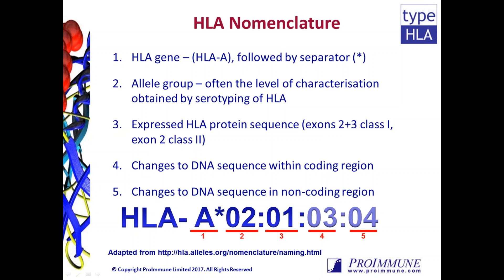The second set of digits — here '01' — indicates the protein sequence expressed in the peptide binding regions of the HLA. As these first two sets of digits are often four digits, for example here '0201', this is often referred to as four-digit resolution, and this is all you need to know to understand the functional impact of the HLA in most cases.